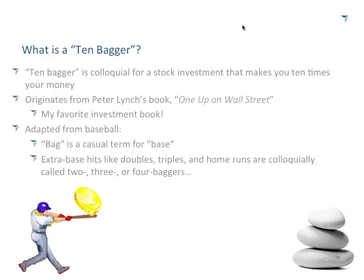The term actually originates from Peter Lynch. He was a fantastic fund manager. Warren Buffett is over-quoted in my opinion, but I actually think Peter Lynch is under-quoted. His style of investing I personally appreciate much more. He has a book called One Up on Wall Street — it's my favorite investment book. If you haven't read it and you like investing in small to mid-cap stocks, I strongly suggest you read it. The 10-bagger term is actually a baseball term — bag is a casual term for base, referring to extra hits like doubles and triples.